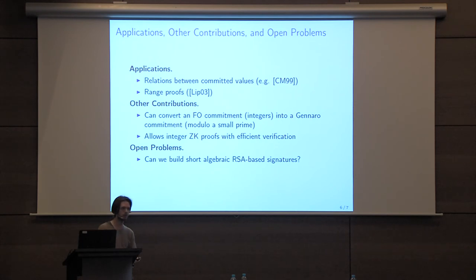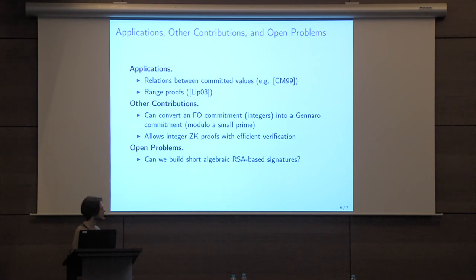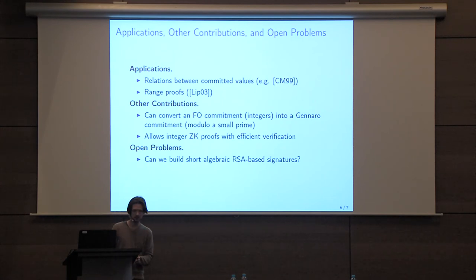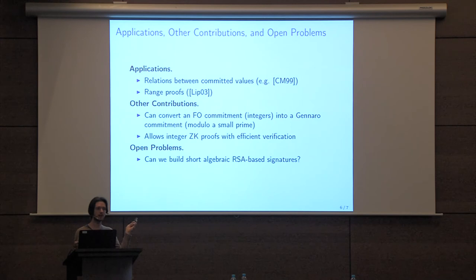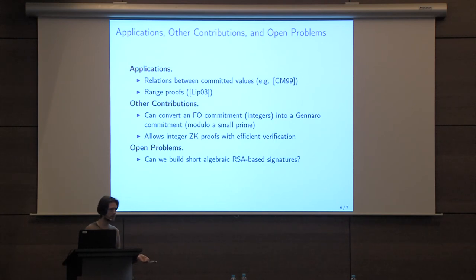This result — focused on zero-knowledge arguments of knowledge of an opening — extends to essentially any zero-knowledge argument for integral relations, i.e., relations between committed values over the integers. In particular, it extends to the very interesting case of range proofs, which prove that some committed value belongs in some interval. Range proofs are used in many of the applications I mentioned, so our results improve the security of a large number of systems relying on zero-knowledge arguments over the integers, showing their security can be based on the RSA assumption instead of the strong RSA assumption.